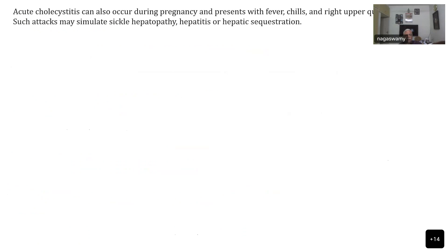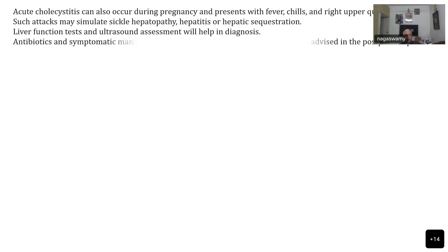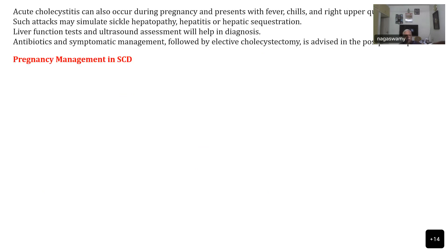Patients can sometimes develop acute cholecystitis during pregnancy, presenting with fever and right upper quadrant pain. Such attacks may simulate hepatobiliary crisis, hepatic microocclusion, or hepatic sequestration. Liver function tests and ultrasound assessment will help in correct diagnosis — ultrasound can identify an inflamed gallbladder. Treatment is antibiotics and symptomatic management, followed by elective cholecystectomy after delivery.